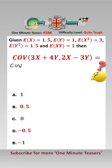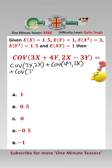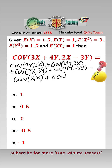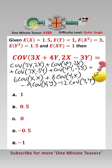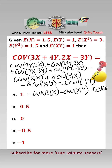We can expand this as covariance of 3x and 2x, add covariance of 4y and 2x, add covariance of 3x and minus 3y, add covariance of 4y and minus 3y. That equals 6 covariance of xx, add 8 covariance of yx, minus 9 covariance of xy, minus 12 covariance of yy. Covariance of xx just equals Var(x), and covariance of yx equals covariance of xy, and covariance of yy is just Var(y).